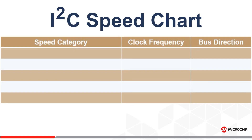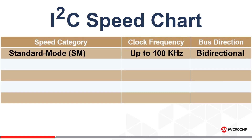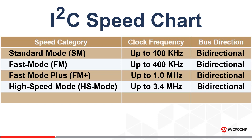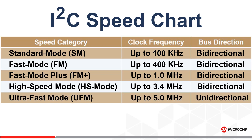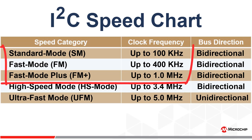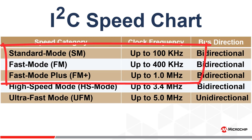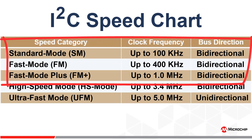In I2C, there are five speed categories: standard mode, fast mode, fast mode plus, high speed mode, and ultra fast mode. These speed categories range from 100 kilohertz to 5 megahertz. 100 kilohertz up to 1 megahertz are very similar, while 3.4 megahertz requires some special considerations, and 5 megahertz being uni-directional requires yet even more special attention. But by far, the most common I2C speed categories are standard mode, fast mode, and fast mode plus, because these three are the easiest to implement.